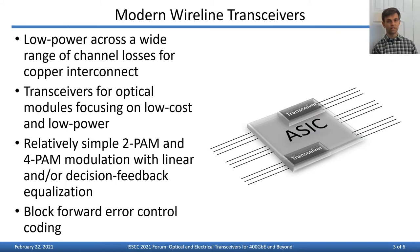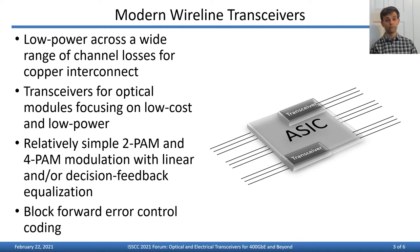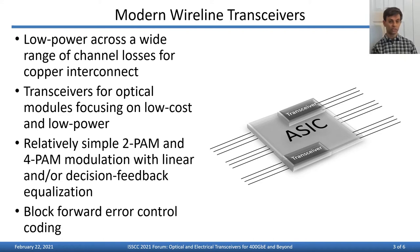First, just a bit of context for the forum. The past many years of active research in wireline links has led to transceivers operating at serial data rates well above 50 gigabits per second and more recently above 100 gigabits per second, while achieving very low power across a wide range of channel losses for copper interconnect. At the same time, research on transceivers for optical modules has focused on low power and low cost implementations, generally using two-PAM and four-PAM modulation with linear and decision feedback equalization. Now it's normal to see block forward error control coding employed in these links.